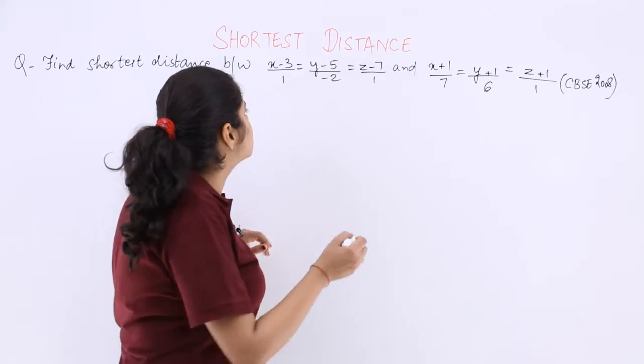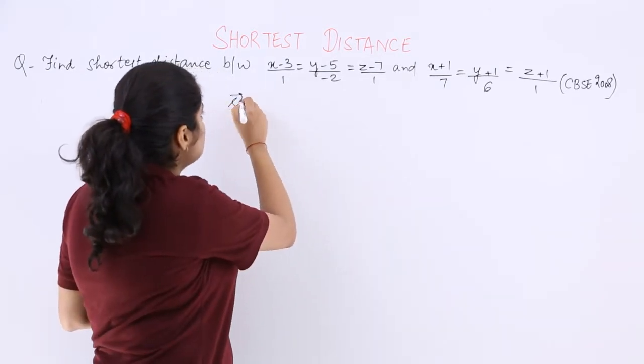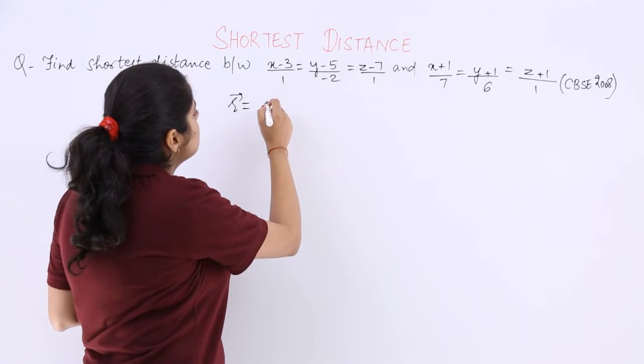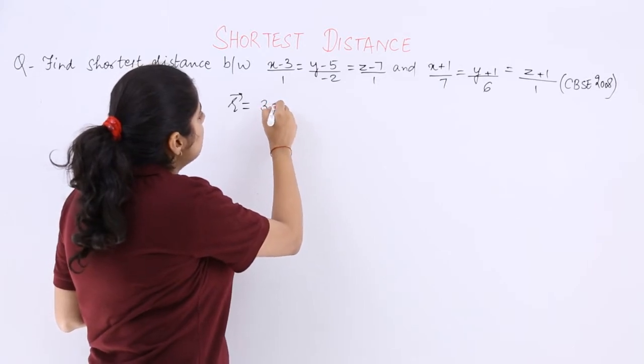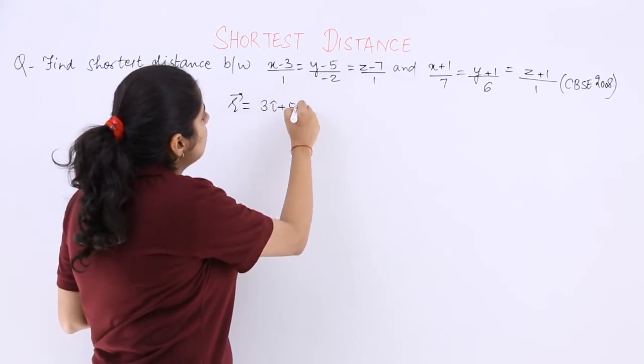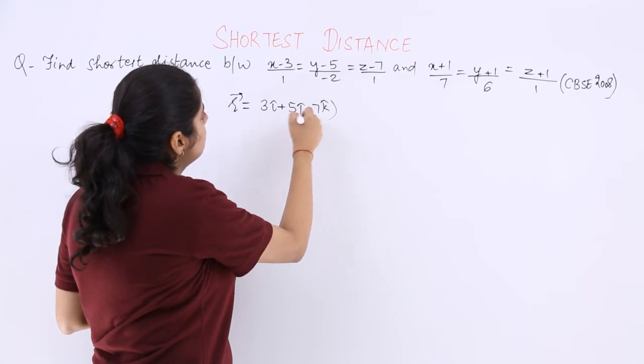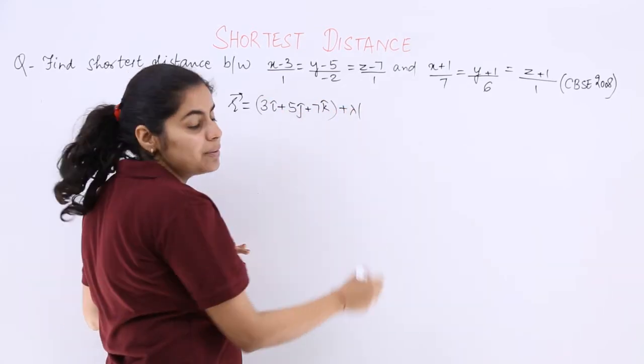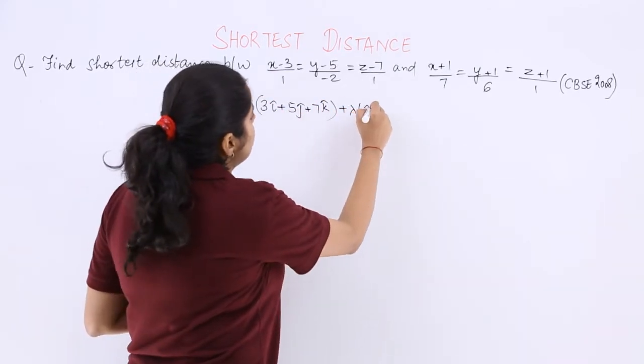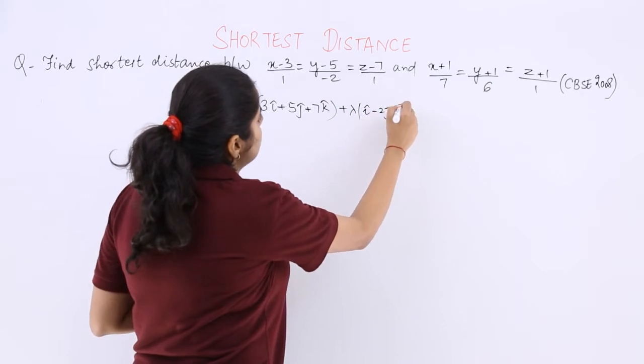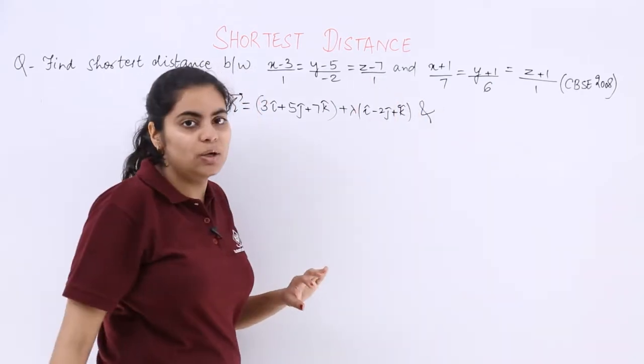So conversion can be done in a manner like r equals a plus lambda b. So this is 3î + 5ĵ + 7k̂ + λ(î - 2ĵ + k̂), which is the second equation.